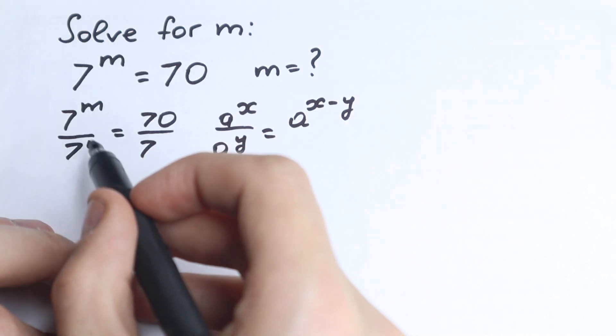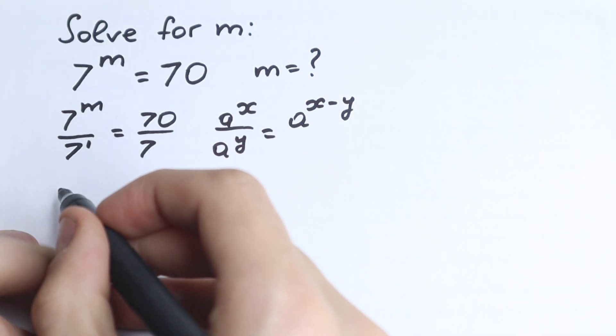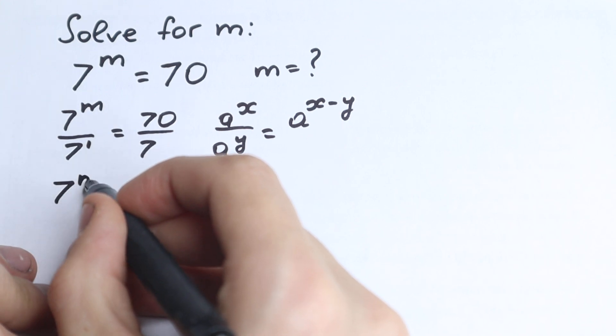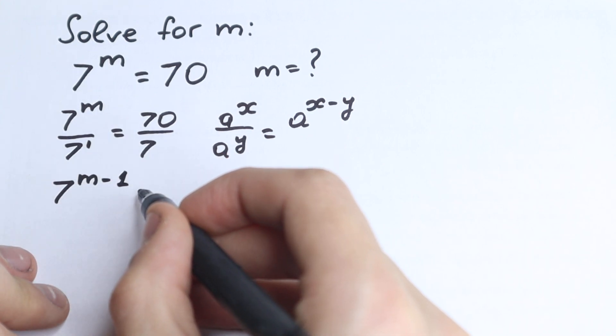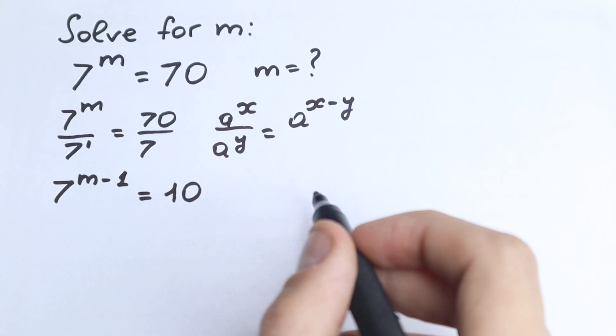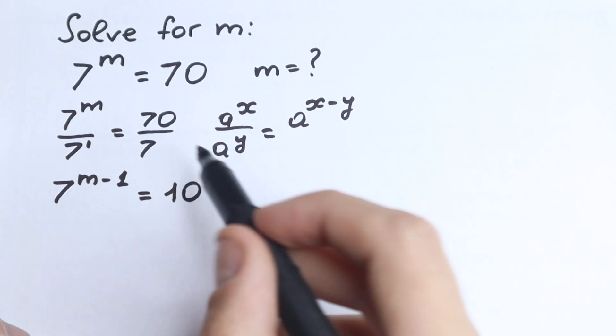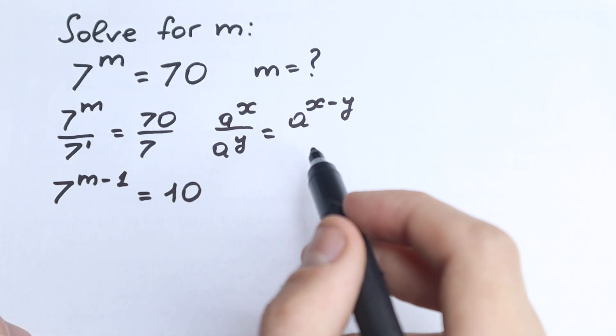So if we apply this rule, we bring this 7 to our numerator, we will have m minus 1. So we have 7 to the power m minus 1 equals 10. This is our first step. We just divided both sides by 7. Let's go to the next step.